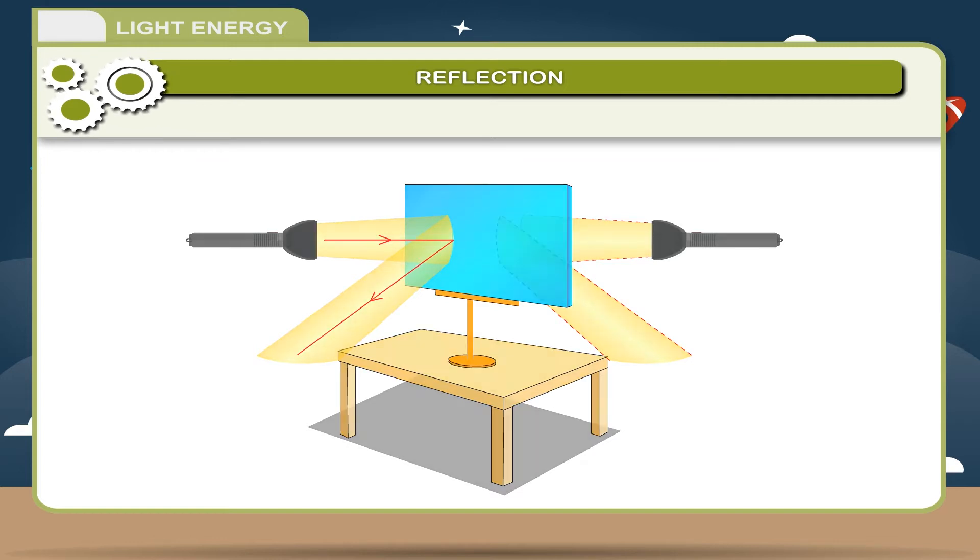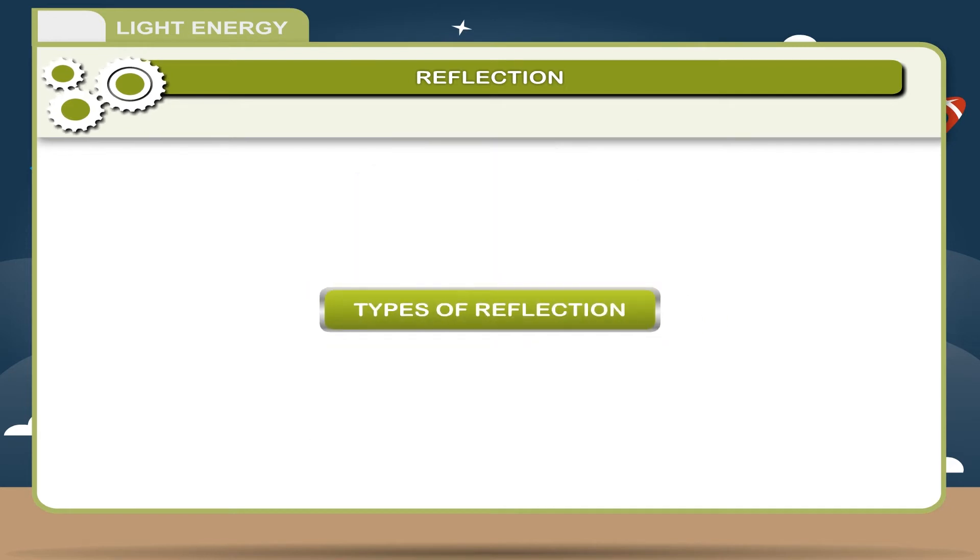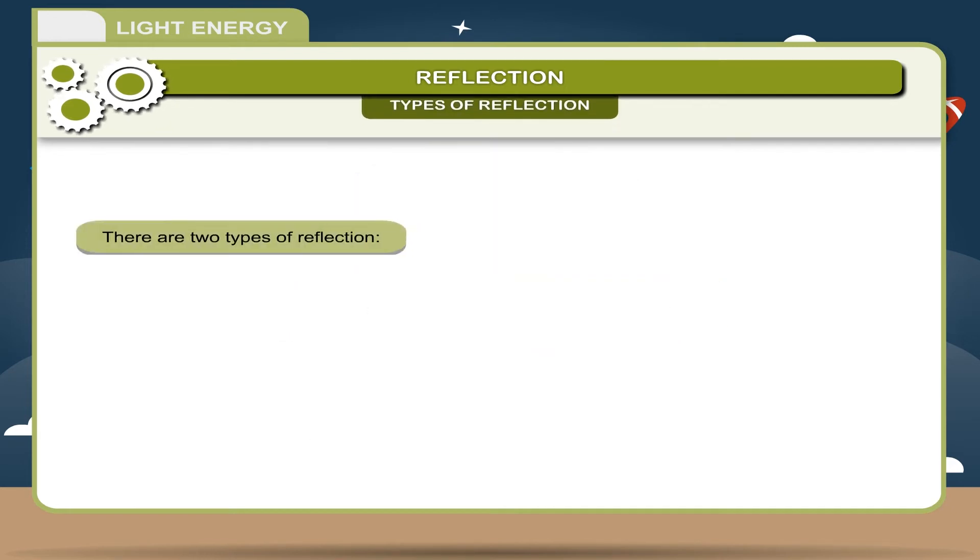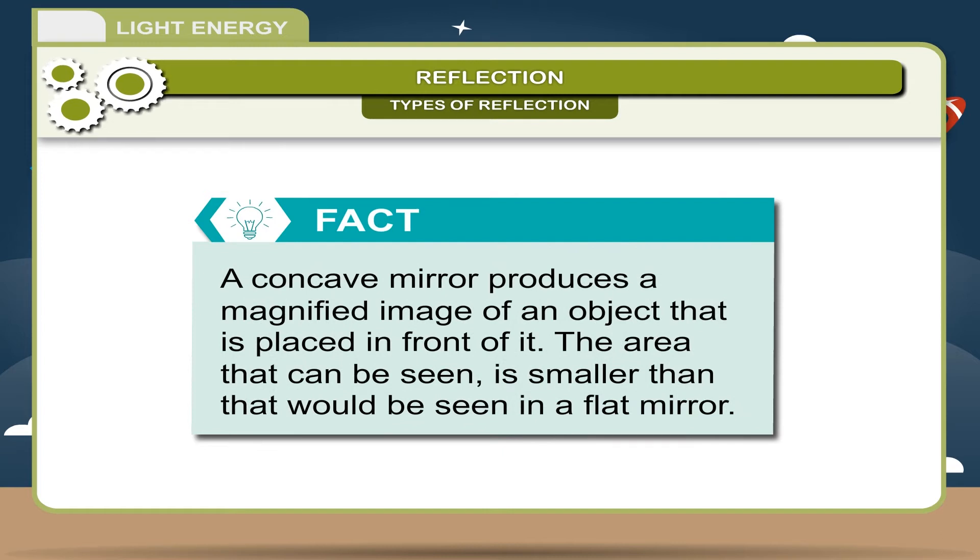Types of reflection. There are two types of reflection: one, regular reflection; two, irregular reflection or diffused reflection. Fact: a concave mirror produces a magnified image of an object that is placed in front of it. The area that can be seen is smaller than that would be seen in a flat mirror.